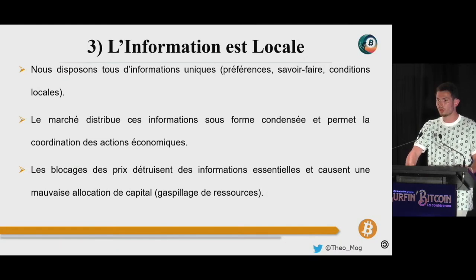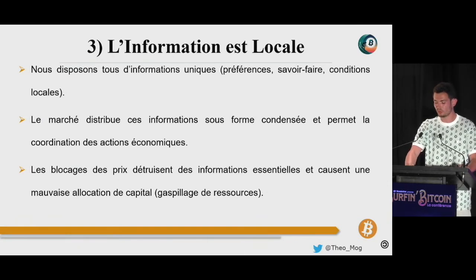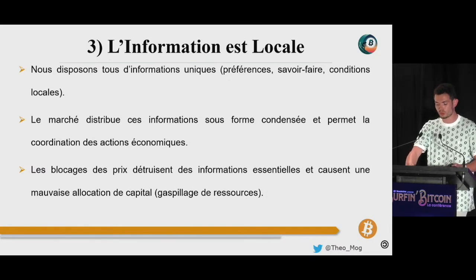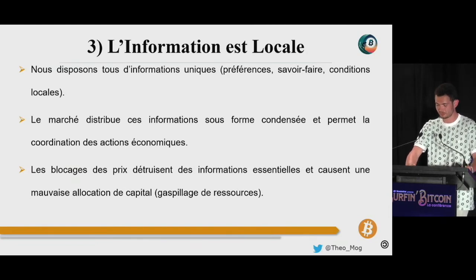À cet égard, toutes les lois de monnaie de cours légal et toutes les banques centrales sont une attaque à l'encontre de la civilisation. Lénine disait que le meilleur moyen de détruire une société c'est de corrompre sa monnaie — comme quoi, même les marxistes ont raison parfois. Notre intérêt propre nous conduit à vouloir détenir la monnaie la plus dure qui soit et donc à abaisser autant que possible nos préférences temporelles, ce qui contribue à notre prospérité collective. En empêchant la sélection de la monnaie sur le marché, les banques centrales et les défenseurs de lois de cours légal s'arrogent le pouvoir de bafouer les droits de propriété de tous, aux motifs fallacieux que cela garantirait le bien commun ou la stabilité financière.